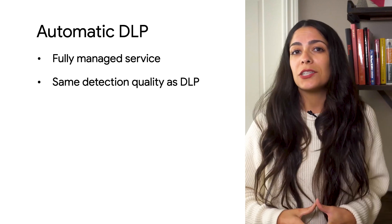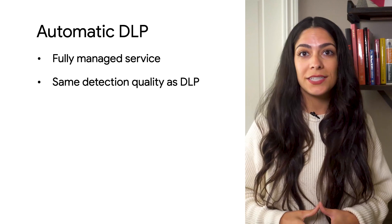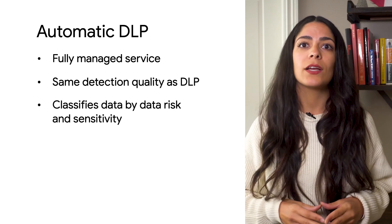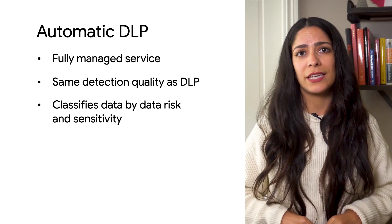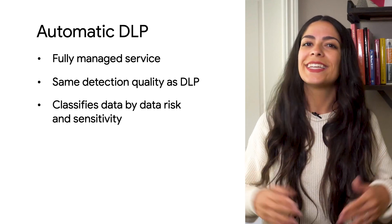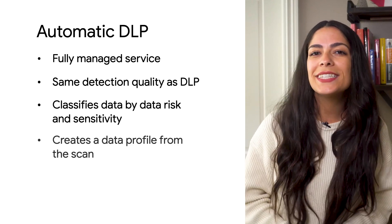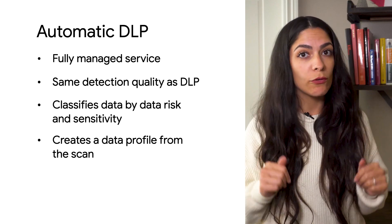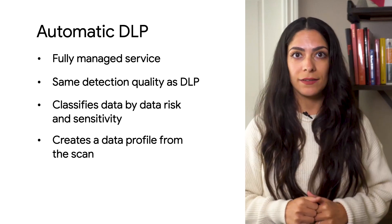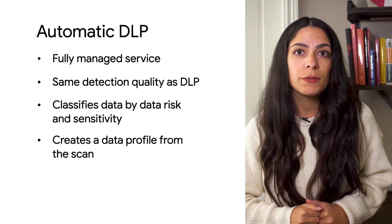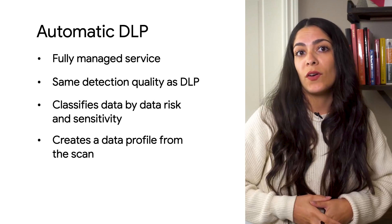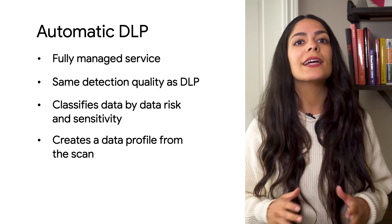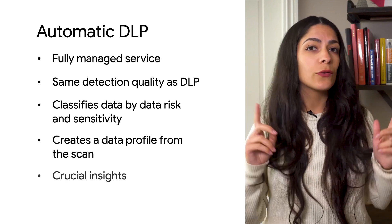It gives you the same detection quality as DLP and lets you protect data by identifying where sensitive and high-risk data resides automatically. It generates a set of metrics and insights — a data profile — from scanning the data. Among these metrics are the protected info types found in BigQuery tables, free text score, and data risk level.